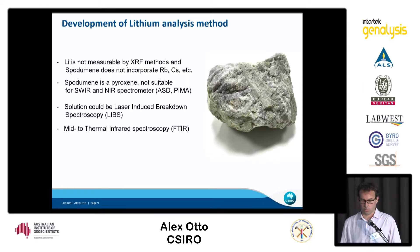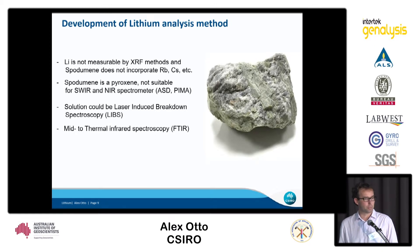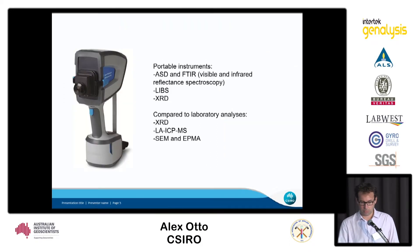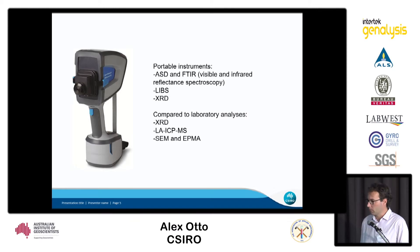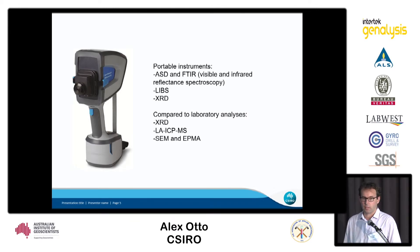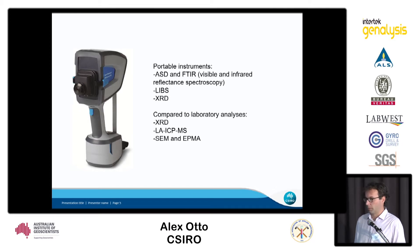We also looked into applying FDR spectroscopy and analyzing for the mineral specifically. This is what the instrument looks like — an Agilent handheld FDR spectrometer able to measure from about 2,000 to 15,000 nanometers.